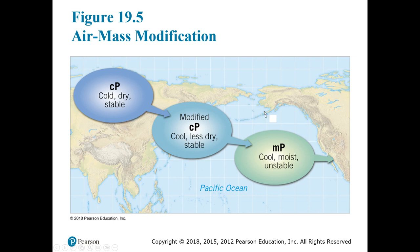Air masses start out with one set of characteristics, but as they move, they are modified. Continental polar air, as it moves southward, is going to be cool but not cold. It will be less dry as it travels over a body of water. And as it moves even further south and towards the west coast of America, it's still going to be cool but will have picked up a lot of moisture.